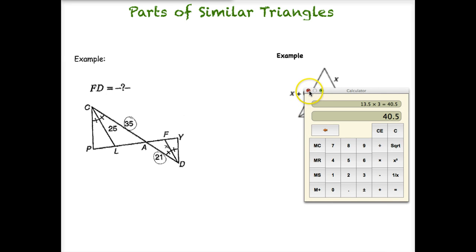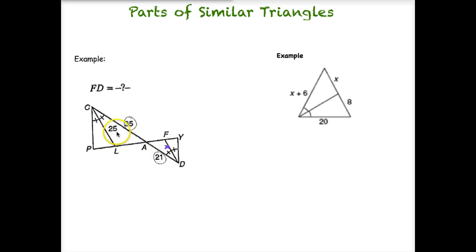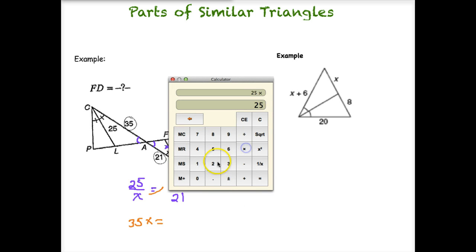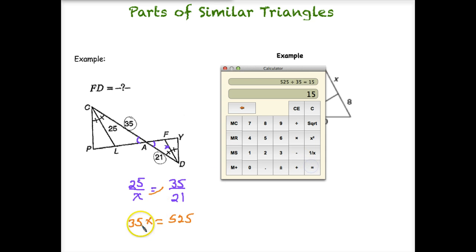Let's try a few more examples. In this first case, we have two similar triangles — we know that because we have a congruent angle at C and angle D, as well as vertical angles that are congruent. We want to solve for X, and it looks like we have an angle bisector because we can see the congruency marks. Proportional parts of similar triangles are always proportional, so comparing the angle bisectors to the sides, we set up a ratio. Cross multiplying, X times 35 is 35X, and 25 times 21 gives 525. Dividing by 35, we get X equals 15.